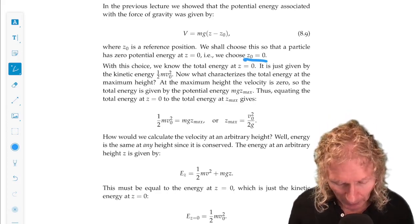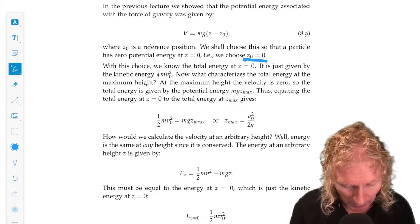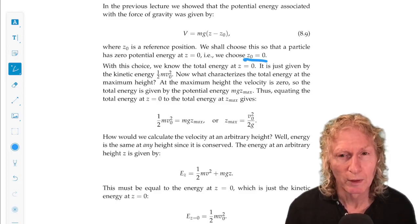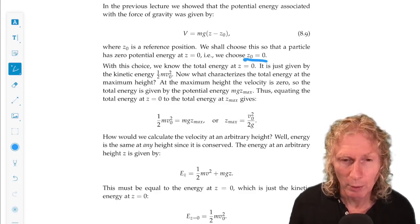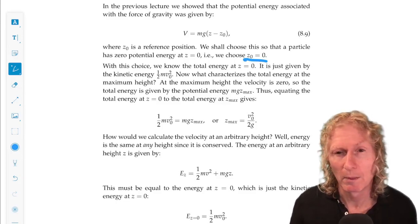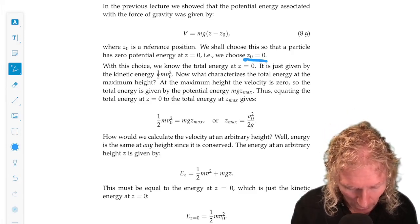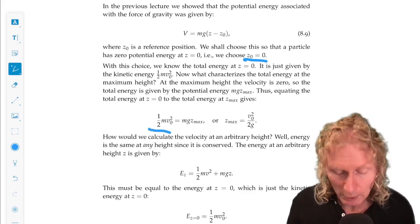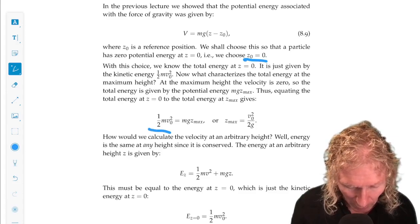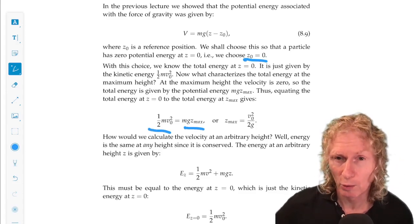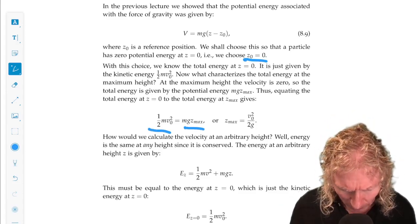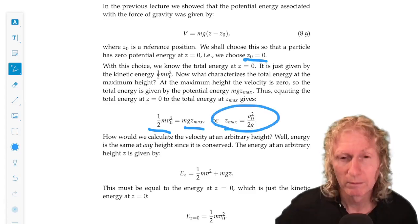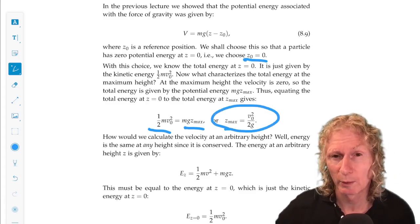Getting the maximum height is easy because we use conservation of energy. When the particle is launched, that's when it has only kinetic energy, no potential energy. When it reaches its maximum height, it has only potential energy, no kinetic energy. And we can then solve easily for the maximum height.